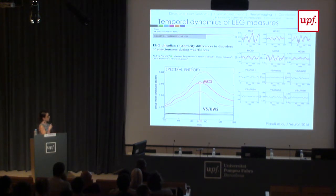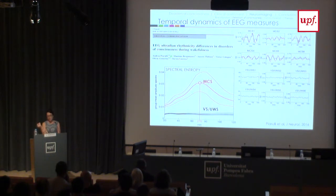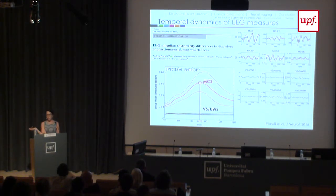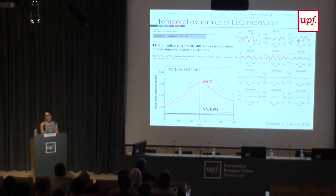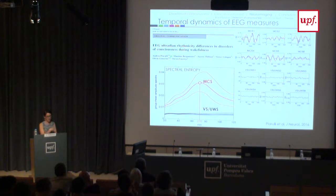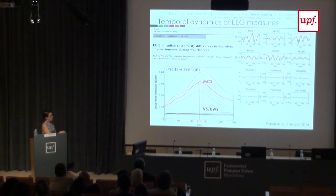More recently we also looked at entropy as a measure of vigilance. Minimally conscious state patients fluctuate about every 70 minutes — they can show response to command at one moment and present like a vegetative state patient an hour later, which is why multiple assessments are essential. Vegetative state patients showed no fluctuation at all — their entropy was always pretty much the same.